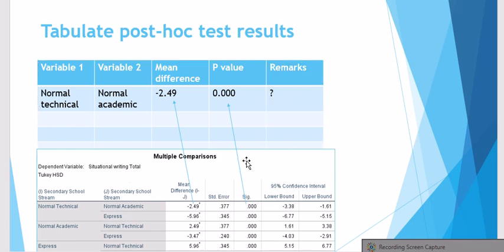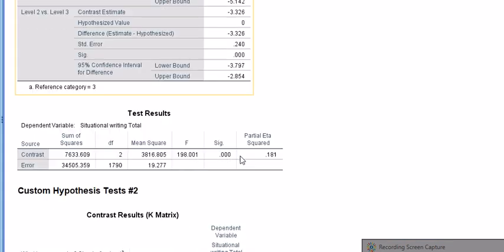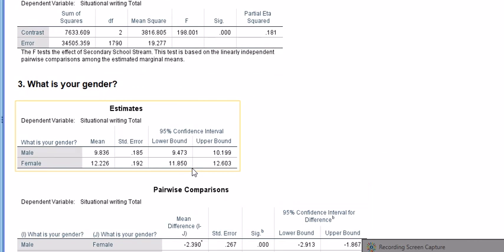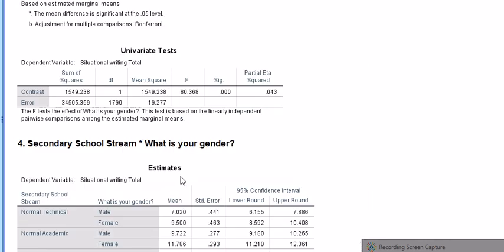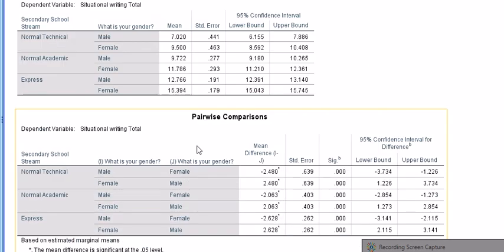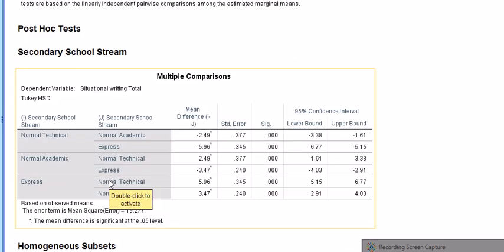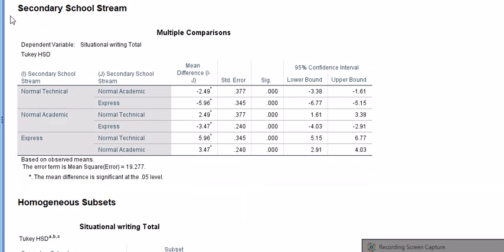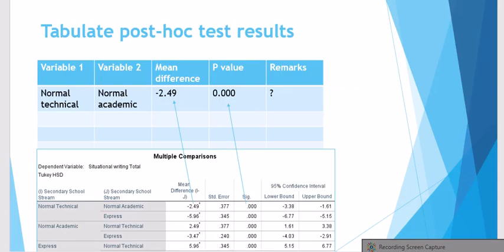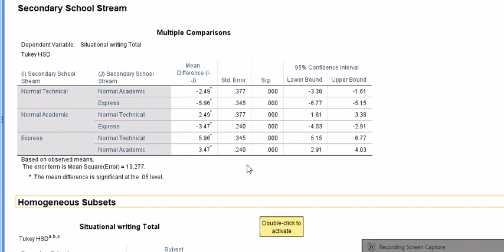So this table is also easily found under post hoc analysis. So you scroll down quickly and you find comparisons, post hoc tests, and here are those tests. So this is the one I think, yeah, this is the one that I have reported.